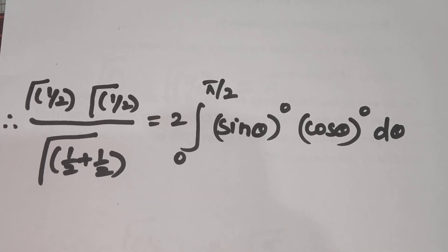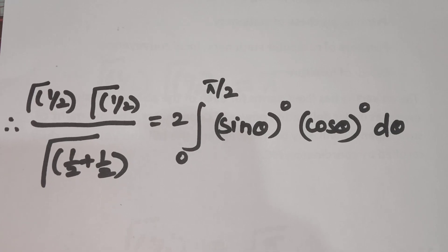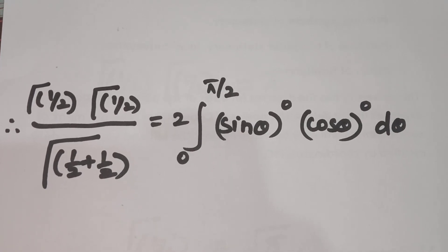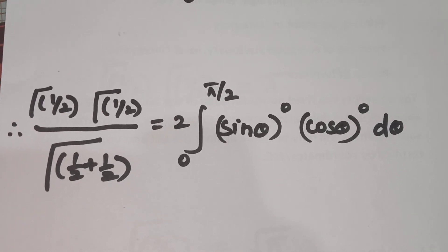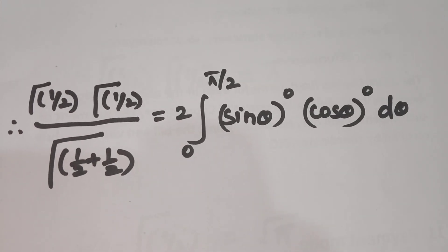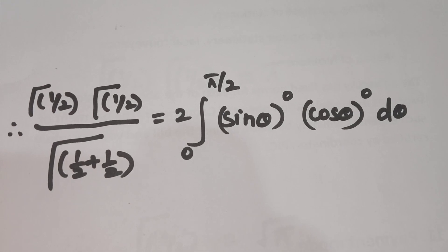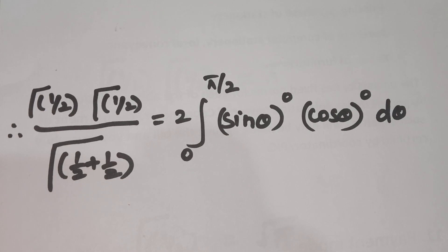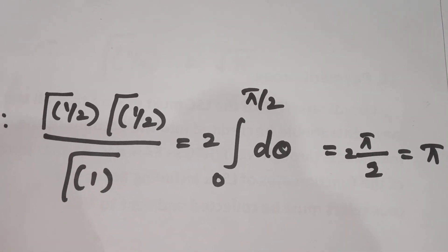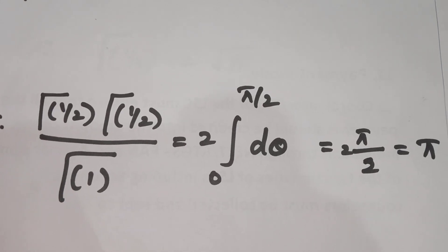The LHS is beta of (1/2, 1/2). By property number one of this video, beta(m,n) equals gamma(m) into gamma(n) divided by gamma(m+n). Therefore the LHS can be written as gamma of 1 by 2 into gamma of 1 by 2 divided by gamma of 1 by 2 plus 1 by 2. In the denominator, gamma of 1 by 2 plus 1 by 2 equals gamma of 1.